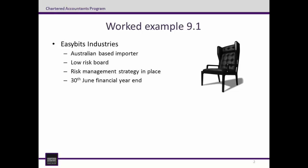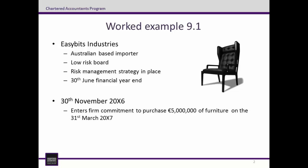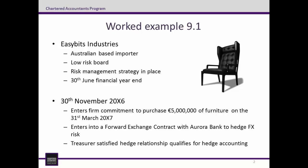EasyBits has a 30 June year end. On the 30 November 2006, EasyBits makes a firm commitment to purchase €5 million worth of furniture on the 31 March 2007. Given its risk management strategy, it also enters into a forward foreign exchange contract to hedge the FX risk of the purchase. This contract with Aurora Bank is for EasyBits to receive €5 million and pay $7,812,500 on the 31 March 2007. The bank involved is AA plus rated by Standard & Poor's throughout the term of the forward contract.